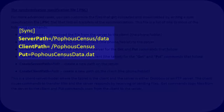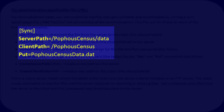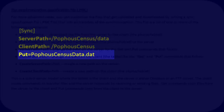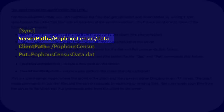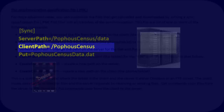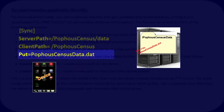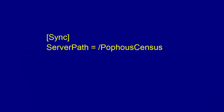For example, these commands will copy the file pophousecensusdata.dat from the directory .csentry on the device (that is, the phone or the tablet) to the directory .pophousecensus.data on the server. When the put is executed, the data file is placed on the server in the .pophousecensus.data folder. In addition to these commands, the .pnc file must also include information about the server being connected to.